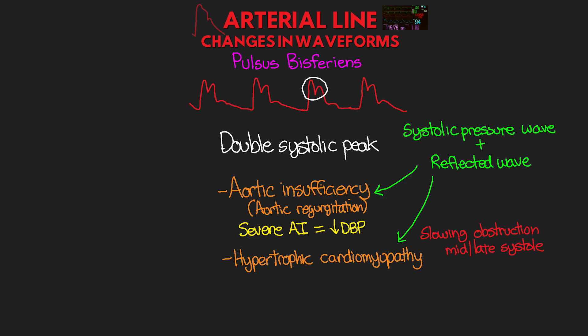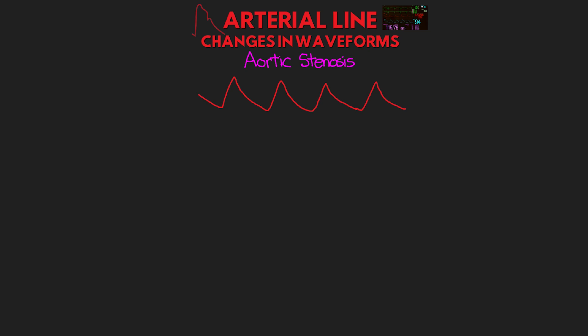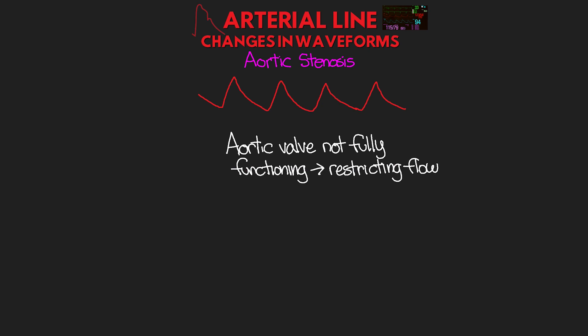The last abnormality is for patients with aortic stenosis. With aortic stenosis, we have an aortic valve that's not fully functioning, thus restricting flow. We see this manifest in our pressure waveform by a slowing of that systolic upstroke. Along with that, we're also going to see a diminished size of the waveform as well as a less defined or even absent dicrotic notch. That was a quick review of some of the changes and abnormalities that we can come across with our arterial waveform.